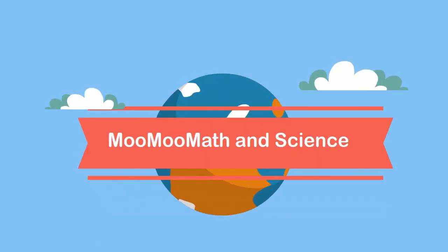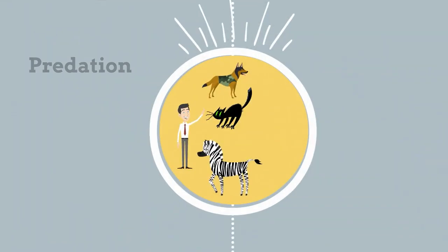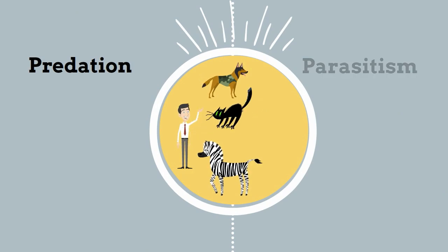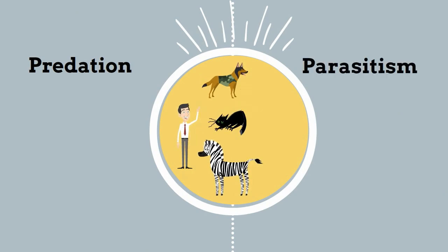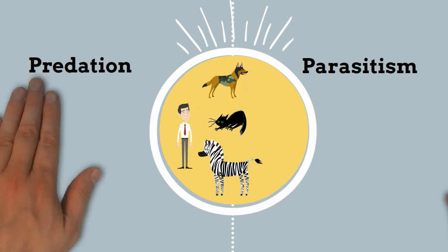Welcome to Moo Moo Math and Science. In this video I would like to talk about the difference between predation and parasitism. In both of these interactions one individual benefits while the other is harmed. However, they are also very different.